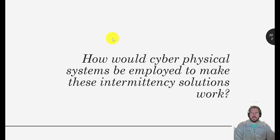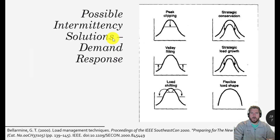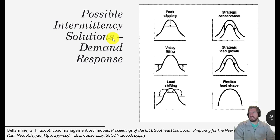What I want you to think about — and what will help you with your assignment for this unit — is how cyber physical systems would be employed to make these intermittency solutions work. Also think about how these cyber physical systems might use AI. Going back to demand response: maybe we have IoT devices on all the light bulbs in all of our buildings. When we really need to reduce electricity use, controlled with AI, we turn down those lights a little bit. In hallways we might not need light at all times, and during critical periods AI can automatically shut off non-essential lights.